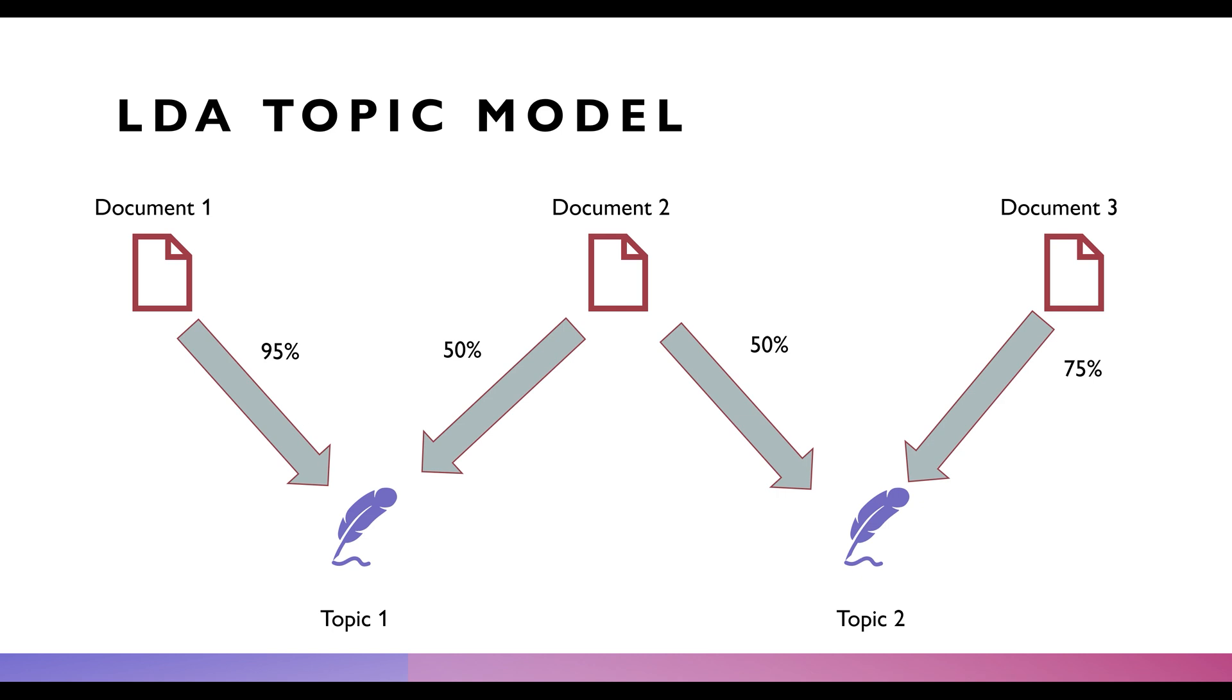Document one is 95% correlated to topic one, meaning most of document one deals heavily with that topic. Document two, however, is a rough 50-50 split: 50% topic one, 50% topic two. Document three is about 75% topic two.